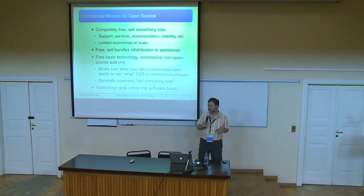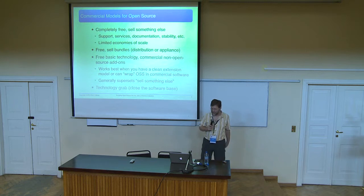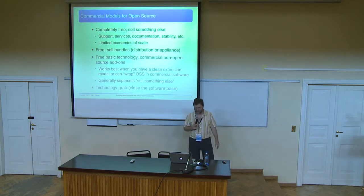So that was markets. Let's talk about models. One model for an open source company is that you continue to just give away the code and you sell something else. Common things are support. Services which is customization and that sort of thing which costs more than vanilla support. Documentation. Stability perhaps.